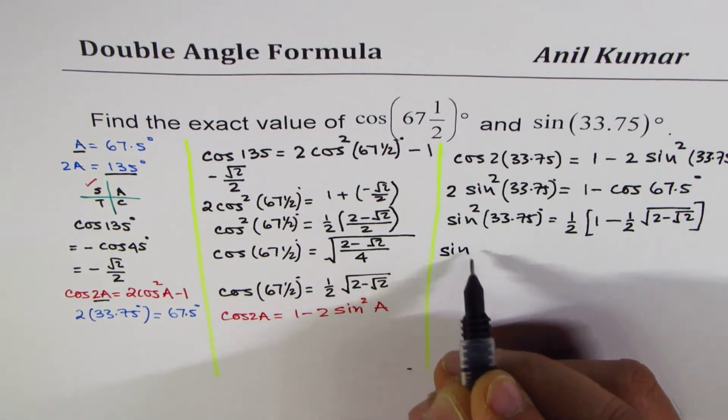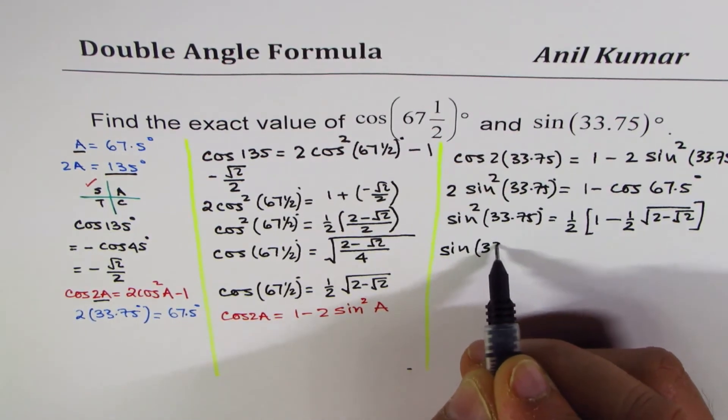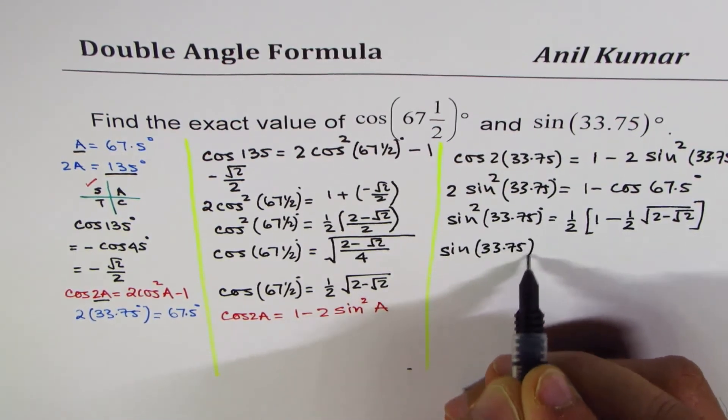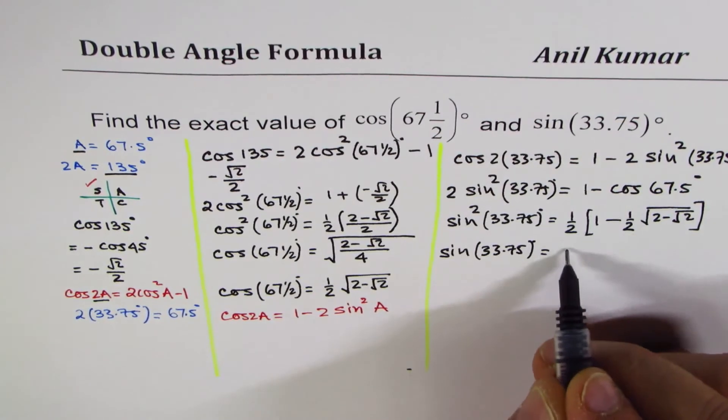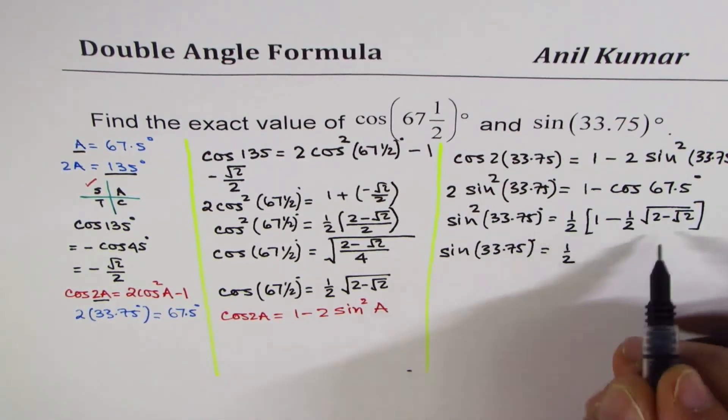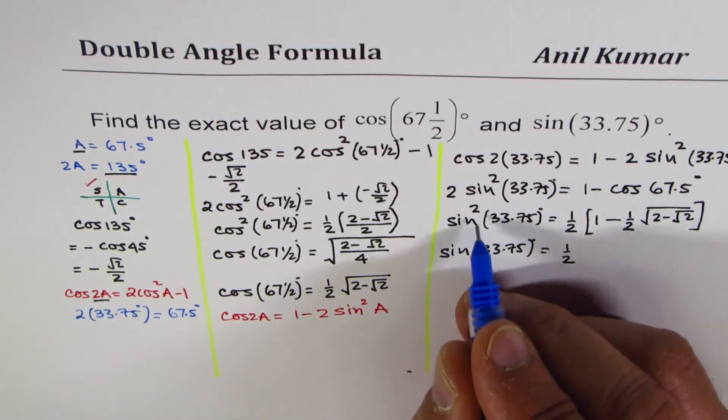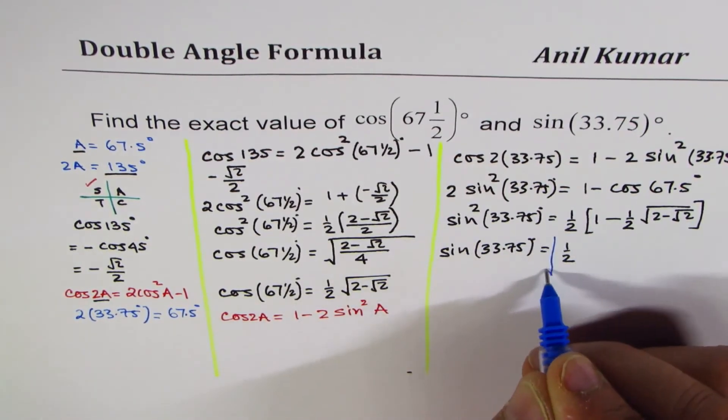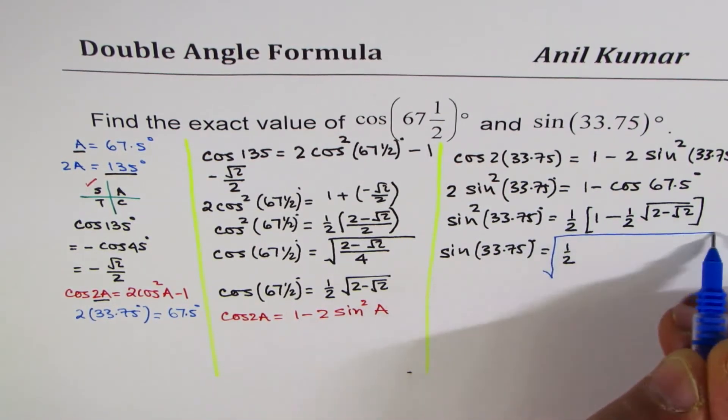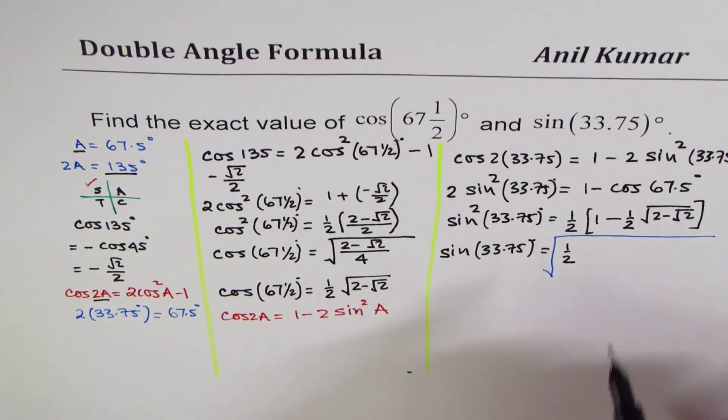Now, sine of 33.75 degrees is equal to, we can say half, well, square root of all this. Let me do square root in a different color now, since we remove this square.